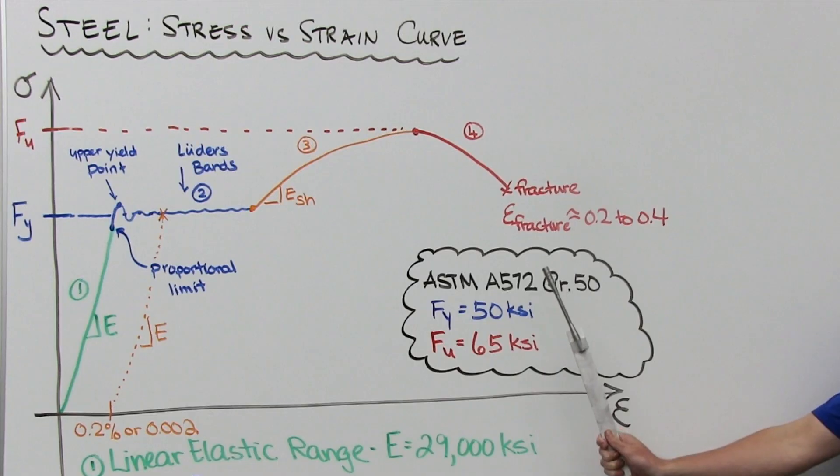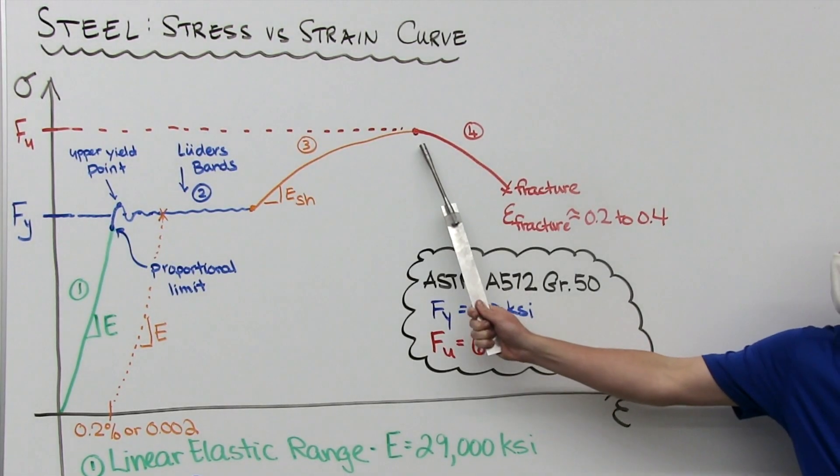Then we hit the ultimate tensile strength, necking, and fracture. You got it. In steel, we call this the ultimate stress F sub U.